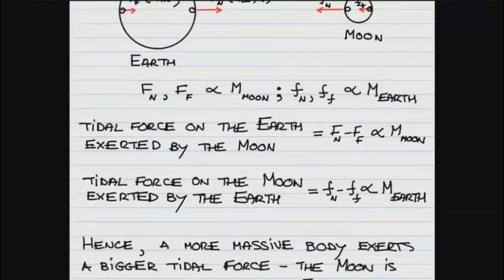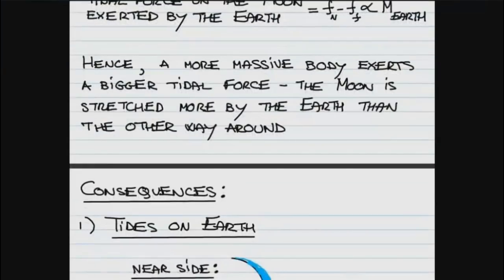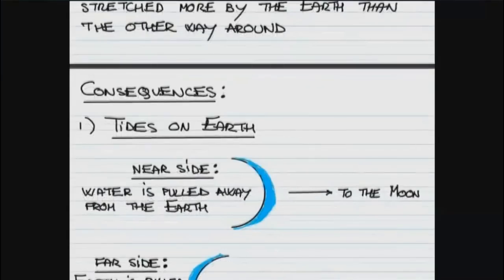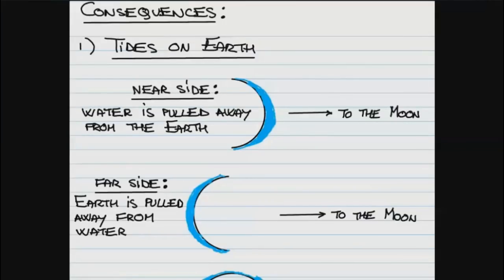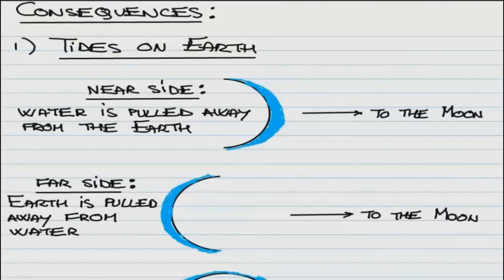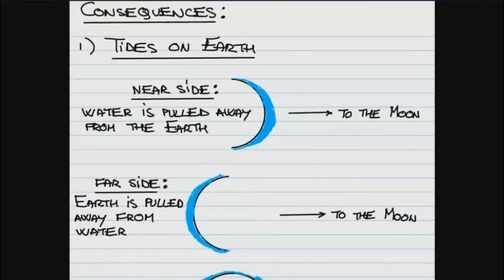Let us look at the consequences of these tidal forces. The first one: it causes the tides on the Earth. There are always two tidal bulges. There are also dry tides — the solid Earth itself is deforming because of the tidal forces exerted by the Moon, but the deformation is much smaller because elastic forces hold the Earth together more firmly than the oceans. Water can flow and is therefore easily deformed, so we can see the effects of tidal forces more easily in the case of water masses.